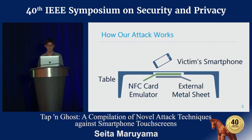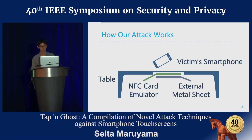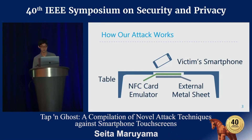Now I'll explain how our attack works. We assume that the attacker implements the attack in a wooden table and puts the table somewhere in advance. In this table, an NFC card emulator and a metal sheet are embedded. When the victim puts their smartphone on the table, this NFC card emulator requests the smartphone to pair with the attacker's Bluetooth device.